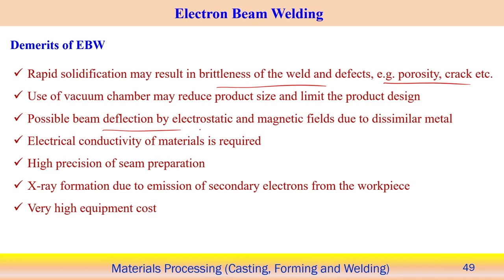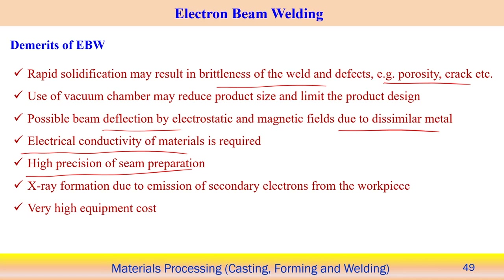Possible beam deflection may occur due to electrostatic and magnetic fields when welding dissimilar metals, because the two different metals have different magnetic permeabilities. The Seebeck effect can deflect the beam to one side at the interface, making it very difficult to focus exactly at the dissimilar metal interface. Material must be electrically conductive. High precision seam preparation is required since the electron beam is focused on a very precise position — very small misalignment may not be tracked by the system.